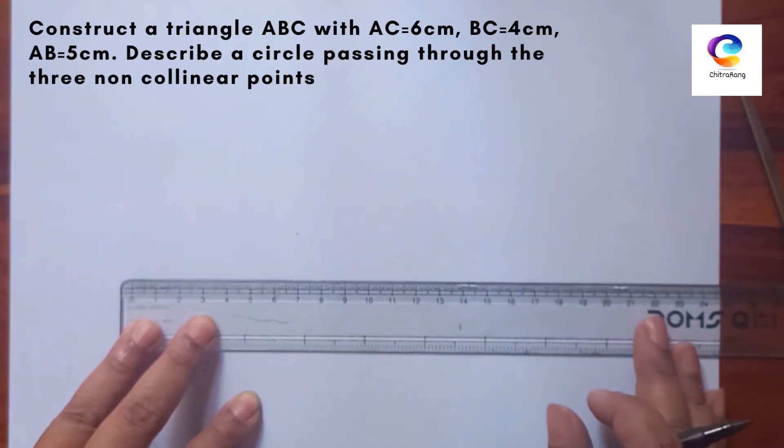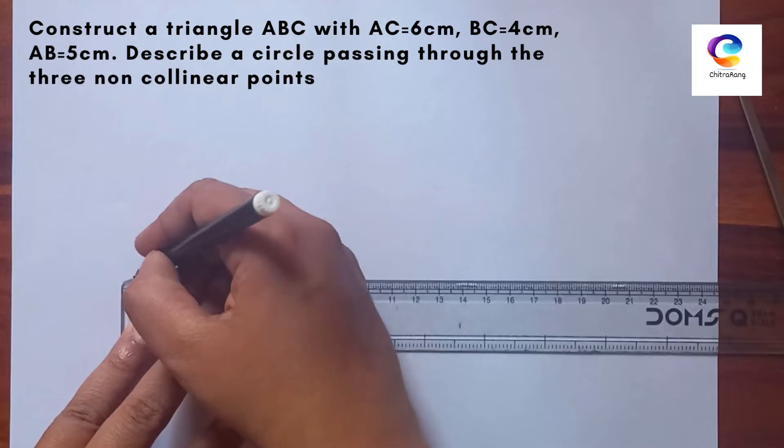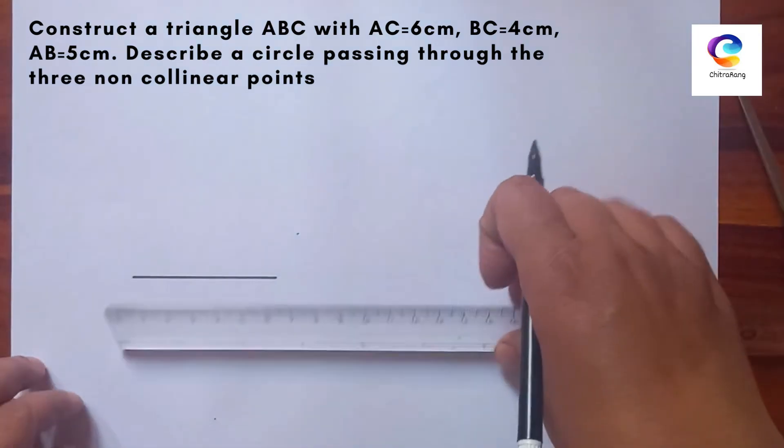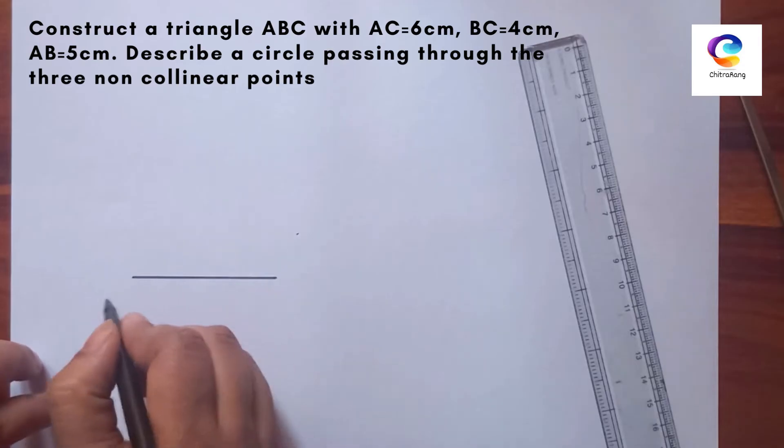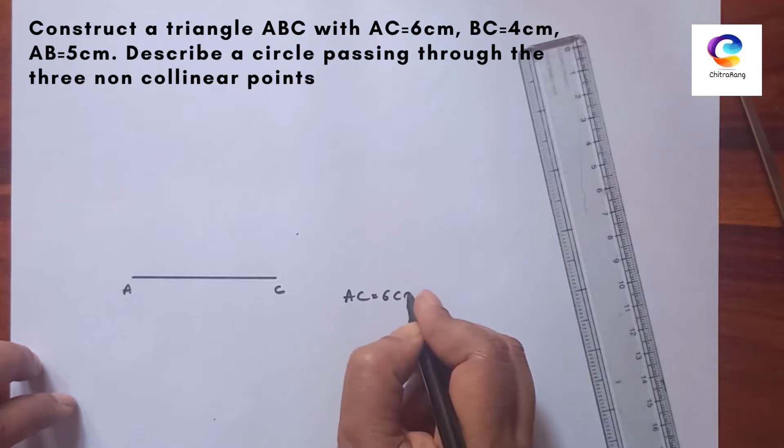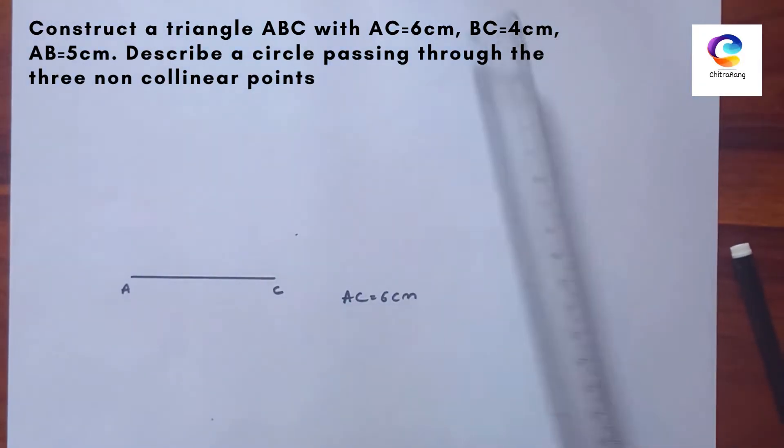Okay, 6 cm AC. You can write here: AC is equal to 6 cm, and the other sides are given 4 and 5.